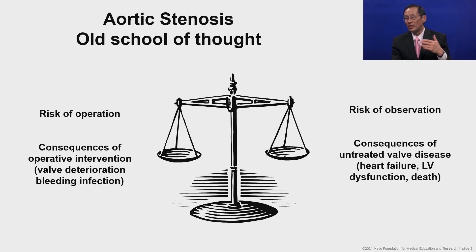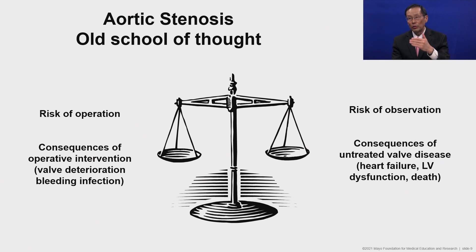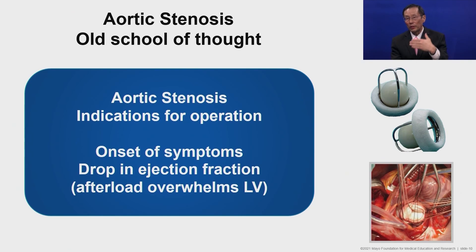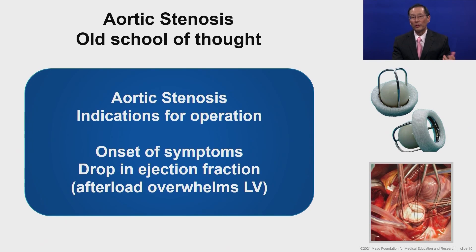Back in the 1980s and early 1990s, we thought it was primarily to treat heart failure and to improve mortality. In the early initial guidelines, the indication for operation with aortic stenosis would be the onset of symptoms or the drop in ejection fraction, because we felt that the drop in ejection fraction would be when that increased afterload is overwhelming the left ventricle.